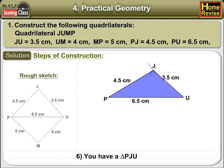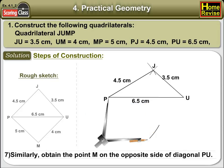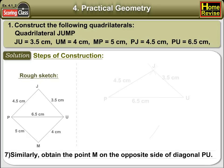You have a triangle PJU. Similarly obtain the point M on the opposite side of diagonal PU.